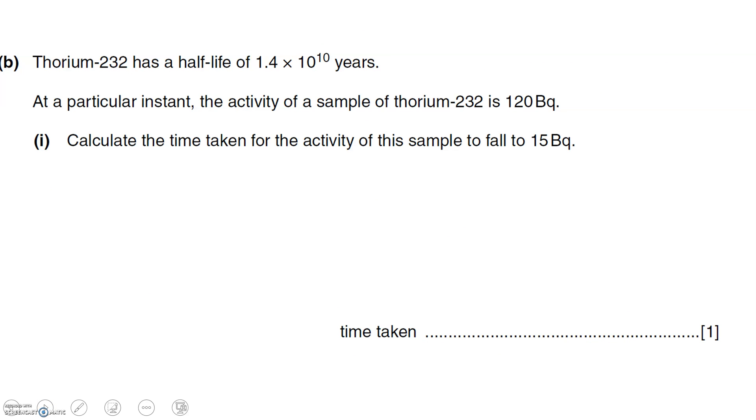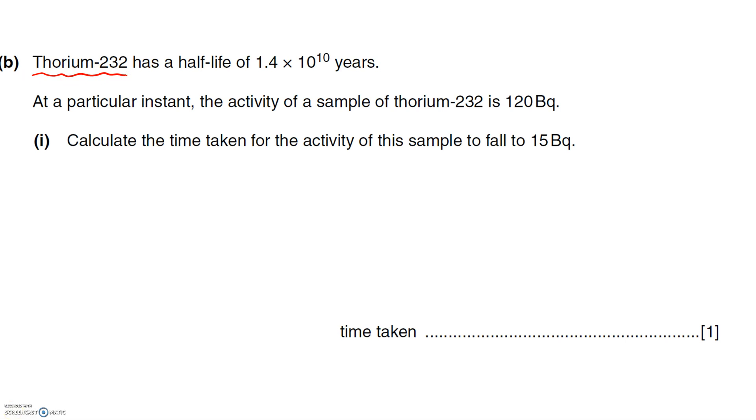Let's have a look at one more question now. So thorium-232 has a half-life of 1.4 times 10 to the 10 years. So it's very long. That means it's a very stable or relatively stable isotope. It takes a long time to decay. So if I release it into this room that I'm in now, it's still going to be there, not decayed probably by the end of the day. Well, definitely by the end of the day. Now, at a particular instant, the activity of the sample of thorium-232 is 120 becquerels. Calculate the time taken for the activity of the sample to fall to 15 becquerels. So we're starting at 120 becquerels. Now remember, every half-life, this is going to half. So after one half-life, we're at 60. Two will be at 30 and three will be at 15 becquerels.